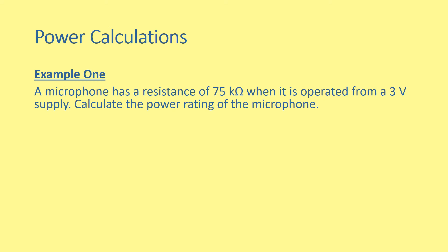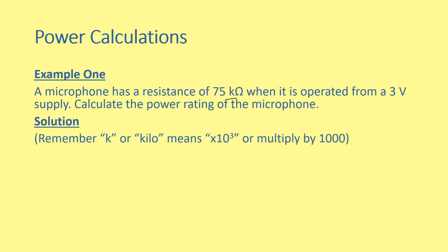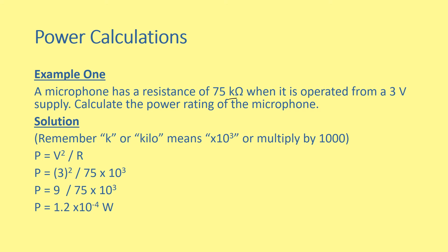Example 1: a microphone has a resistance of 75 kilohms. When it's operated from a 3 volt supply, calculate the power rating of the microphone. At National 5 we add a little bit of extra difficulty, so we need to watch out for the kilo term. Remember, kilo means times 10 to the 3, or multiplied by 1000. So P equals V squared over R, which is 3 squared divided by 75 times 10 to the 3, giving a power of 1.2 times 10 to the negative 4 watts. Wherever we see scientific notation there's always a little bit more difficulty, so take extra care.